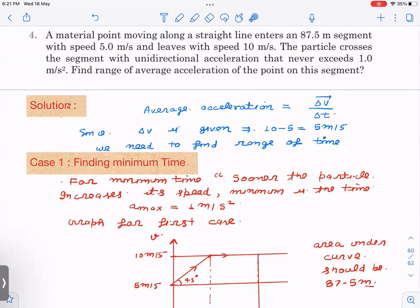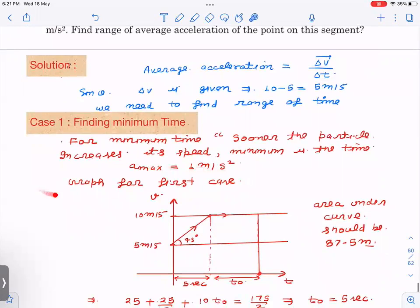I have drawn the graph here for the first case. This is velocity v and this is time t. Initially itself, the particle is moving with the maximum possible acceleration of 1, so the v versus t graph slope will give acceleration. This is 45 degrees, so the slope is 1. Then the particle comes here, increases to maximum speed, and speed cannot be more than 10 meters per second, then continues with 10 meters per second. We need to find out how much time it will take. The v versus t graph area will give us the total displacement which is 87.5 meters.